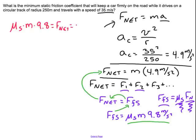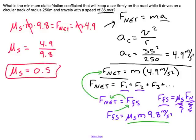F net is equal to mass times acceleration, which was 4.9 meters per second squared. Notice the mass cancels, is actually irrelevant what the mass of the car is. And now I have mu S is equal to 4.9 divided by 9.8, mu S is equal to 0.5 and that is actually my final answer.